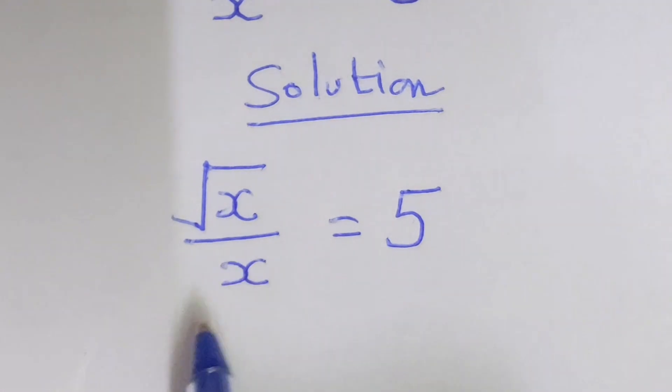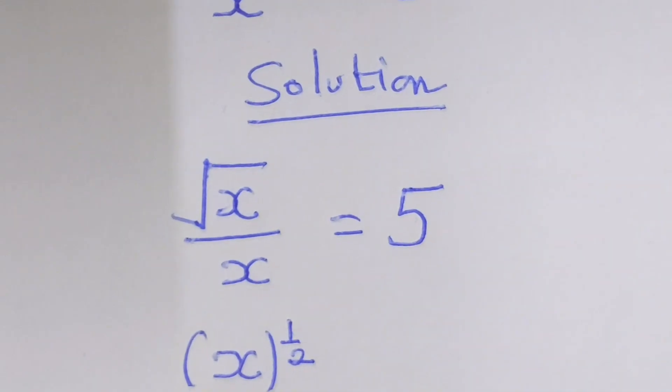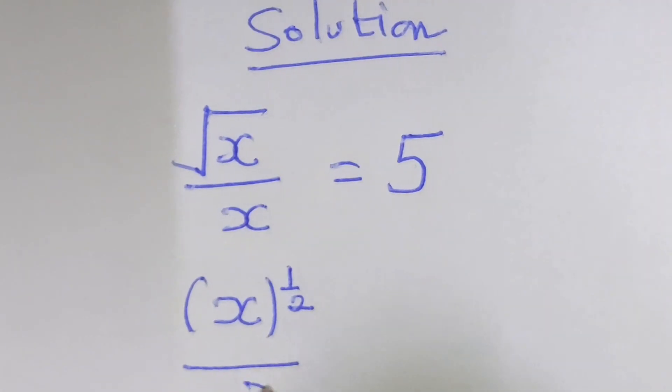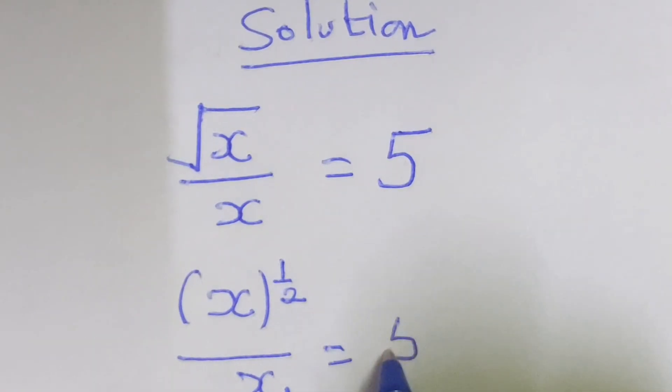Now we know that when we have square root, we mean that you have x power 1 over 2. And of course down here we have x equal to 5.